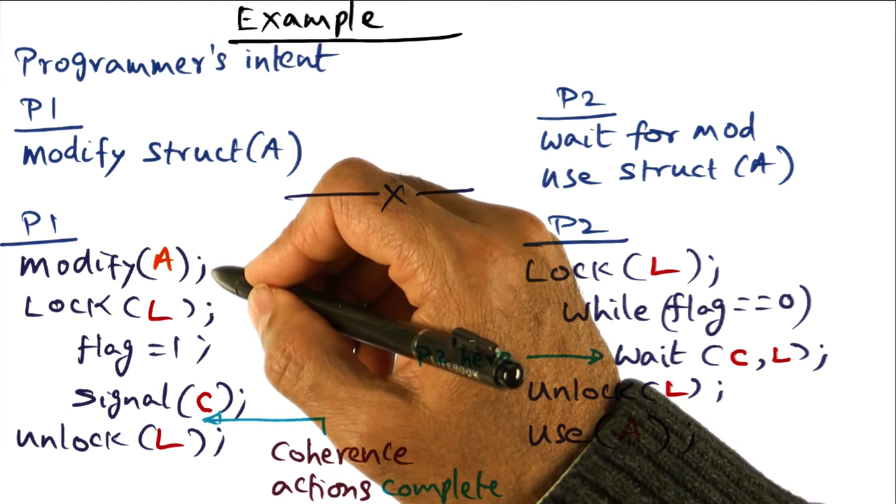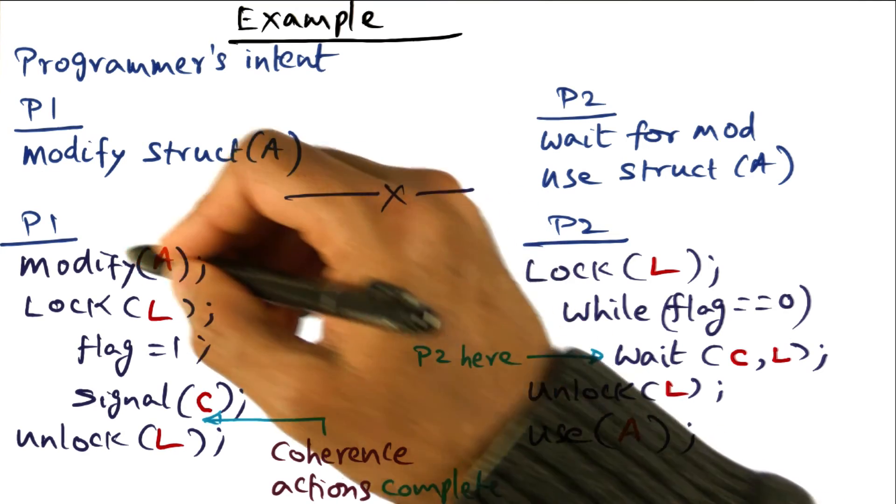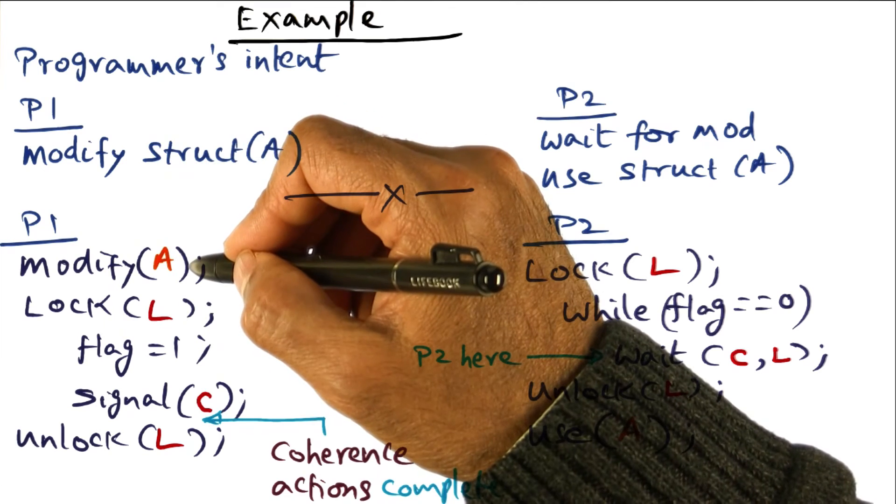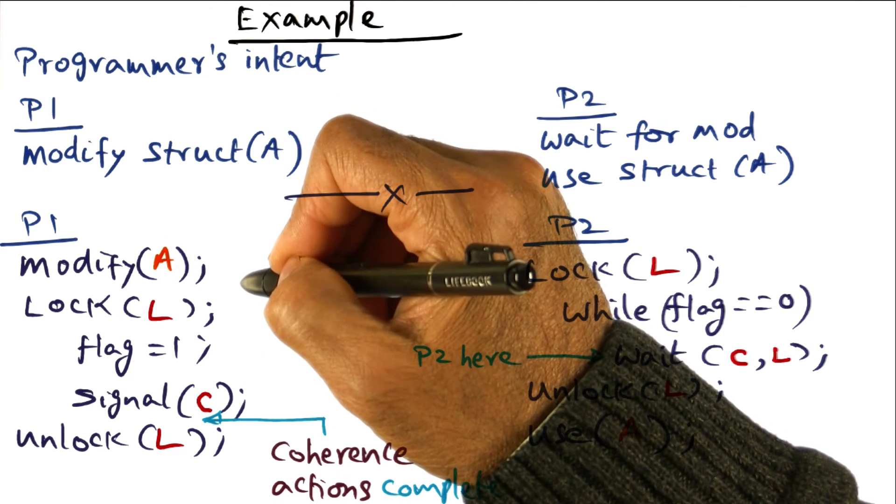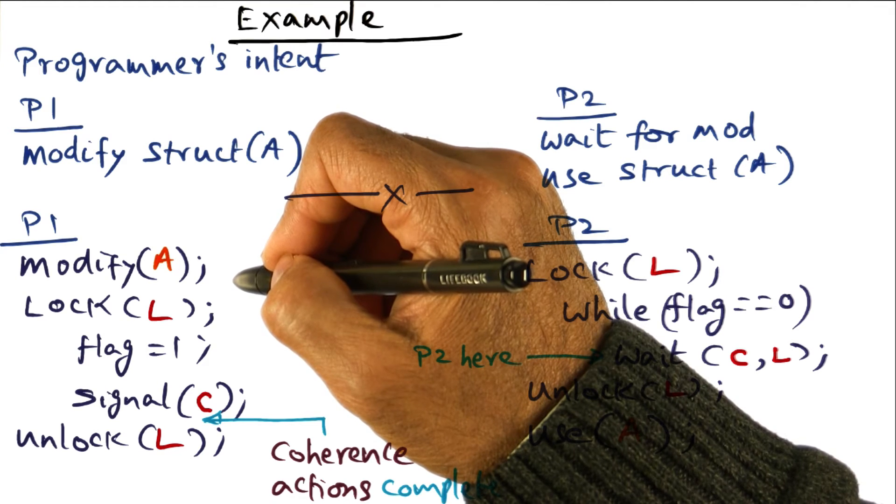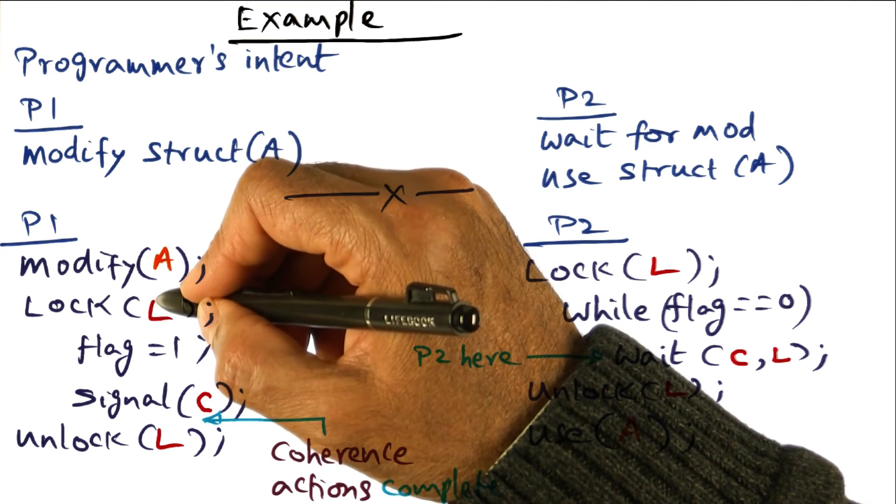If the model was an SC memory model, then for every read, write accesses that are being done in modifying the data structure A, there would have been coherence actions that would have gone on. And those coherence actions, each of them has to complete before you can do the next one and so on.